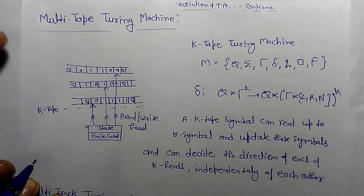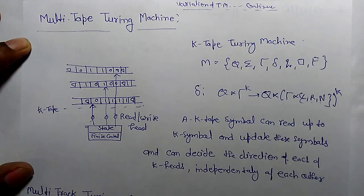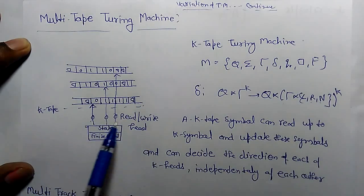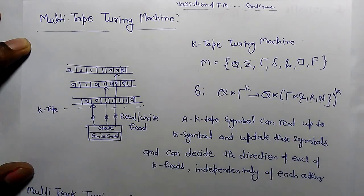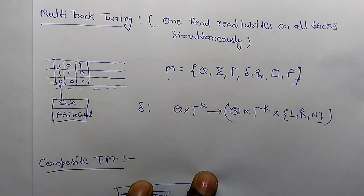However, any multi-tape Turing machine, no matter how large k may be, can be simulated by a single-tape Turing machine. So the multi-tape Turing machine with k tapes and its transition function can be reduced to a single tape. There is another variant: the multi-track Turing machine.